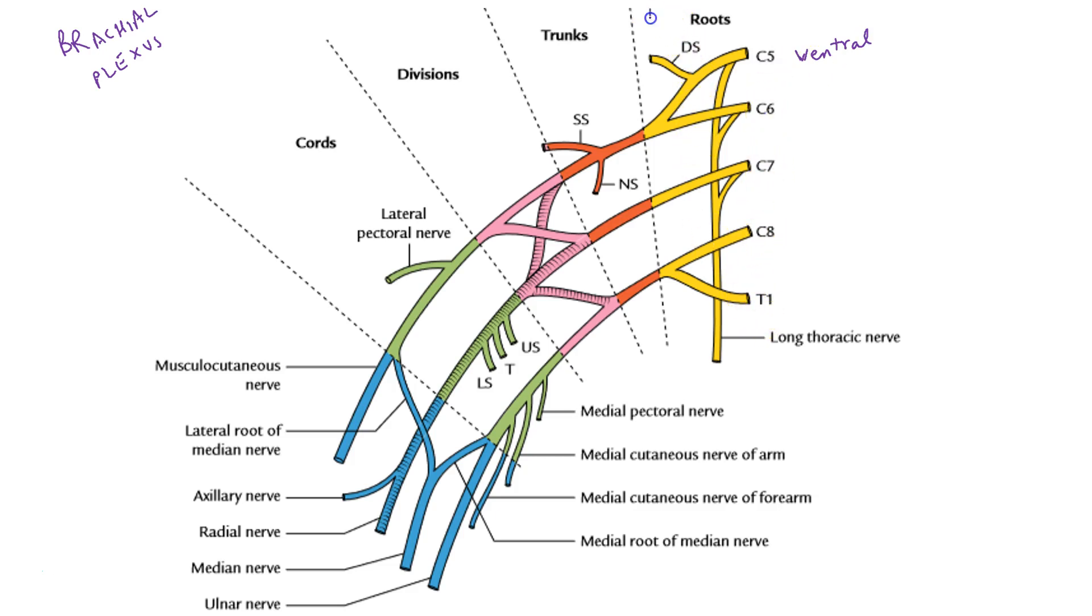It has four components that can be remembered by a simple mnemonic, real teacher drinks cold beer. So we have roots, trunks, divisions, cords and branches.